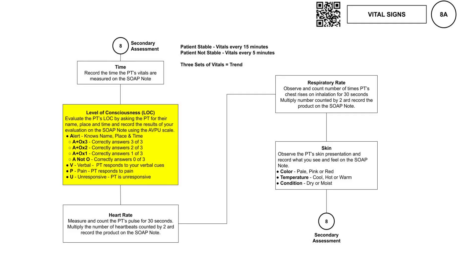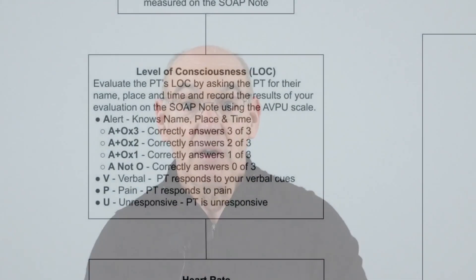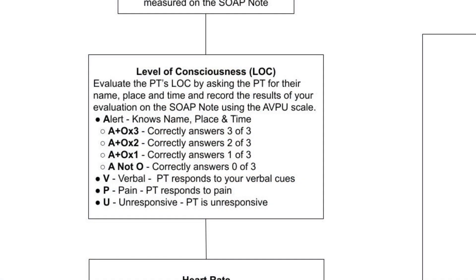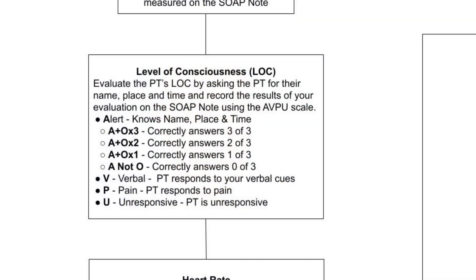Level of Consciousness: The level of consciousness is a critical vital sign in assessing a patient's immediate neurological status, especially in emergency and wilderness first aid scenarios. It gives first responders a quick and effective tool to gauge the patient's awareness and brain function. The AVPU scale is commonly used for this purpose. Let's delve deeper into each component of the AVPU scale, how it's applied, and the additional measure of orientation.